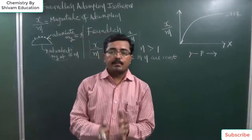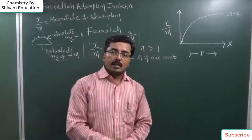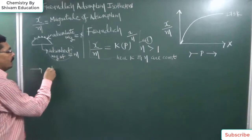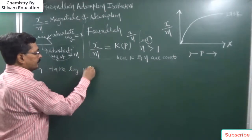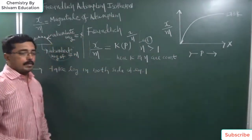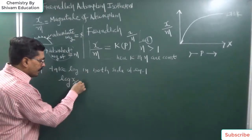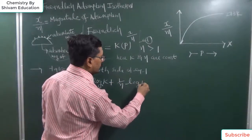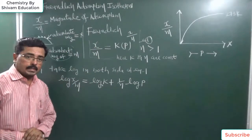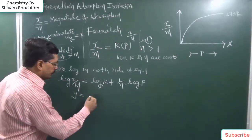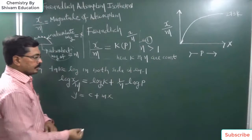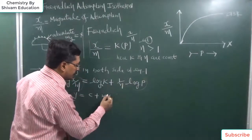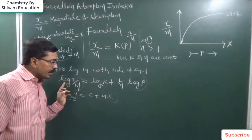Now, to verify whether the Freundlich adsorption isotherm is applicable to a system or not, we take logarithm on both sides of this equation. Taking log of equation 1, we get: log(x by m) equal to log k plus 1 upon n into log p. So we draw the graph of log(x by m) versus log p.